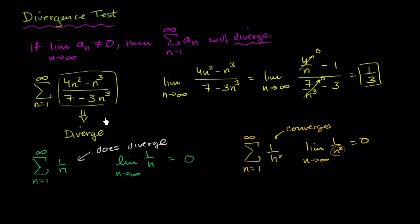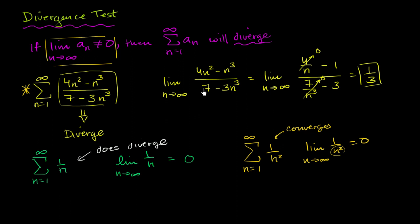Where the divergence test is useful is for things that actually pass the divergence test — when you find that the limit as n approaches infinity of a sub n does not equal zero, like the first example. In that case, the divergence test helps us conclude that the series definitely diverges.